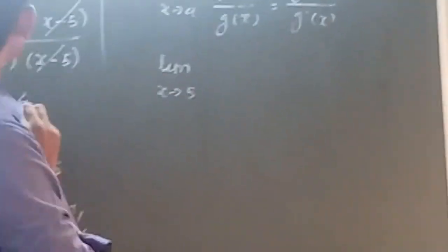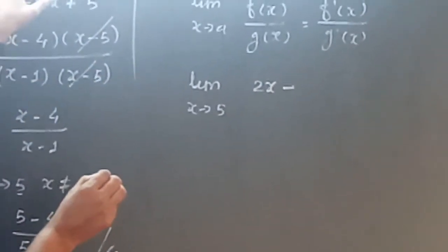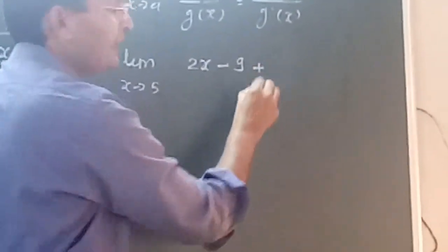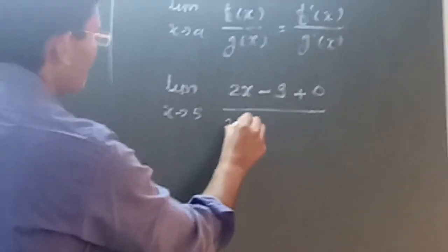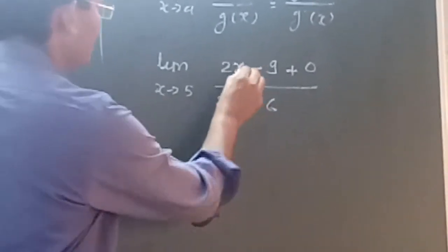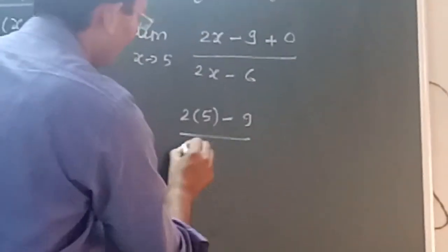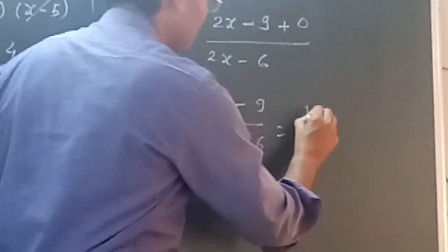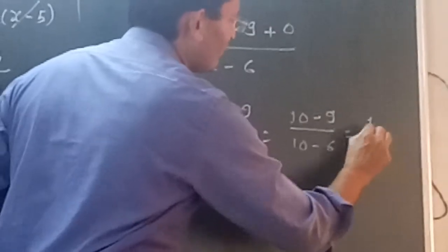Limit x tends to 5. What would be the derivative of x square? It would be 2x. What would be the derivative of minus 9x? It would be minus 9. Plus 20 being a constant term, it is going to be 0 upon 2x minus 6. So x tends to 5, 2 into 5 minus 9 upon 2 into 5 minus 6. The simplification would be 10 minus 9 upon 10 minus 6, which equals 1 upon 4.